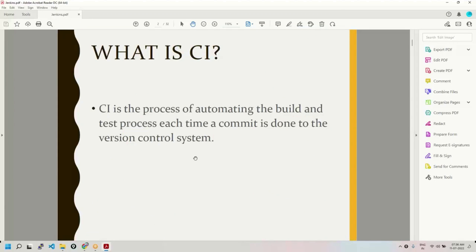Continuous integration is a process of automating the build and test process each time a commit is done to the version control system.